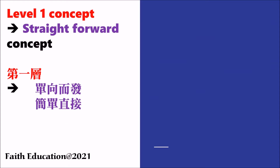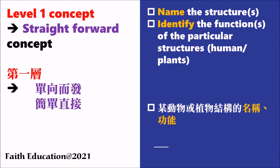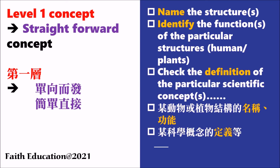There are three types of concepts that can be checked in questions. The Level 1 concept is a very straightforward one — the question may ask you to name the structures, identify the functions, or check the definition of particular scientific concepts like osmosis or diffusion. For example, if the question asks you to state the positive result of the food test or the DCPIP test, that's also a very straightforward question.